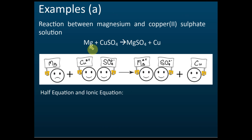Let's look at the case of magnesium with copper sulfate. This diagram shows what I call a 'sad face,' which means the species is not stable. So magnesium here is sad because it's not stable. Copper sulfate consists of a copper ion and a sulfate ion. These two are happy because they are stable — the copper ions and the sulfate ions are happy because they are stable.